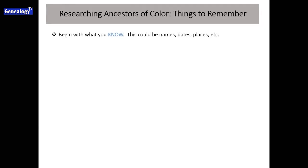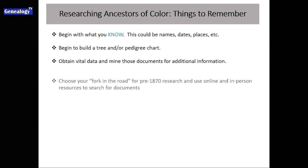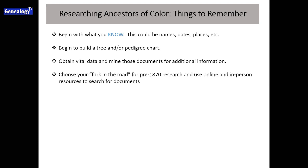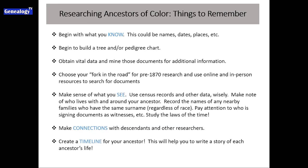Just to review, when researching ancestors of color: begin with what you know — names, dates, places, anything. Begin to build a tree or pedigree chart. Obtain vital data first and mine those documents for the additional information they provide, like parents' names and birth locations. Choose your fork in the road for pre-1870 research and use online and in-person resources to search for the documents. Make sense of what you see; use census records and other data wisely. Make note of who lives with and around your ancestor, record the names of any nearby families with the same surname, pay attention to who is signing documents as witnesses, study the laws of the time, make connections with descendants and other researchers, and remember to create a timeline for your ancestor.